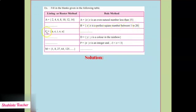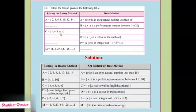Now see the third question. C = {a, e, i, o, u}. These are all vowels. So here we will write C = {x such that x is a vowel in the English alphabet}. Check answer: x such that x is a vowel in the English alphabet — curly bracket close.